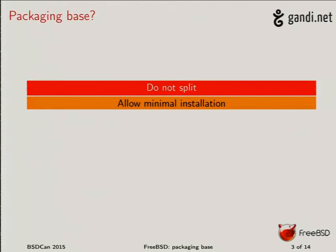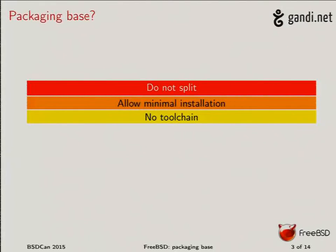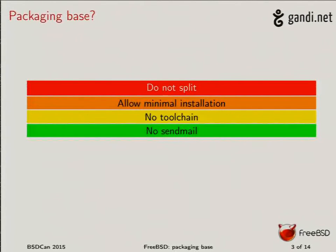Then we have people asking for a very minimal installation — particularly in embedded environments where you don't want all the fancy stuff in the base system, just the minimal binary set needed to run the system. We also have people who say: I don't want any toolchain installed on my server, so why can't we install FreeBSD without the toolchain and all related tools? And some people say they don't like Sendmail and don't want it installed, along with other components like BIND, but they want the rest of the system.